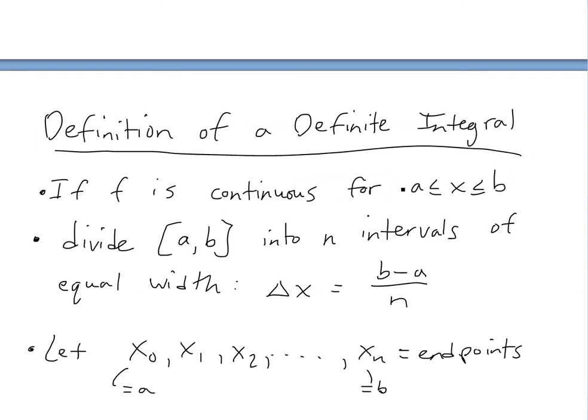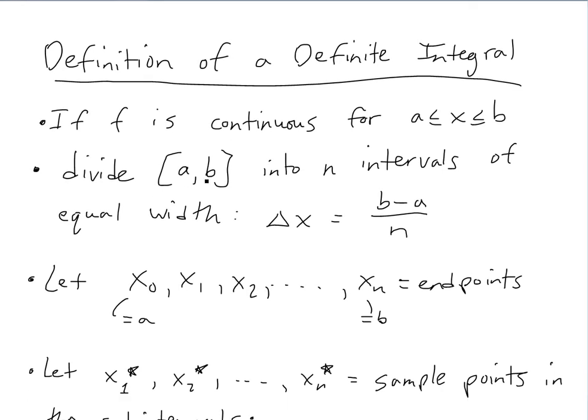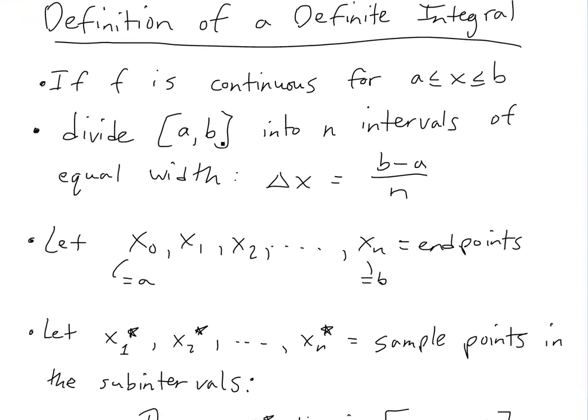So if f is continuous for between a and b, so basically x between a and b, then we could divide the full interval [a,b] into n subintervals, or intervals of equal widths. So delta x is going to be the distance (b-a) divided by the number of rectangles, which are n.